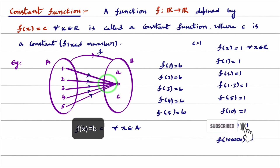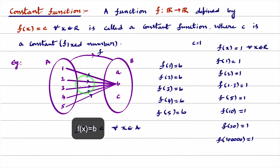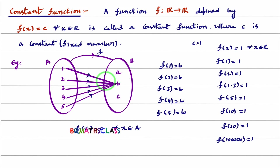Not only this — if all elements of set A are matched to only element a, that means image of 1 is a, image of 2 is a, image of 3 is a, image of 4 is a, image of 5 is also a, then that function is also known as a constant function. I hope you understand what a constant function is.